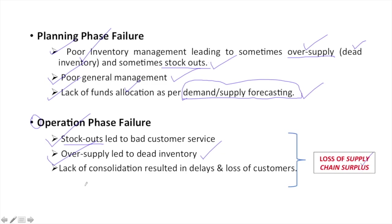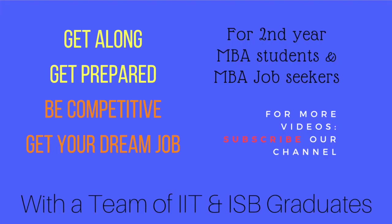Third, there was lack of consolidation at a city level. As the company didn't consolidate its operations, there were delays in replenishing orders, which also led to loss of customers. A company that expanded for a decade so enormously had to shut down its operations within two years due to bad supply chain decisions. So friends, you will agree that it is very important to decide supply chain decisions properly so that the company could have an effective supply chain to fulfill customer needs. That's it for this lecture. Thank you very much.